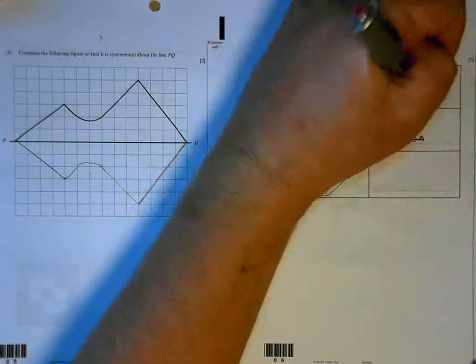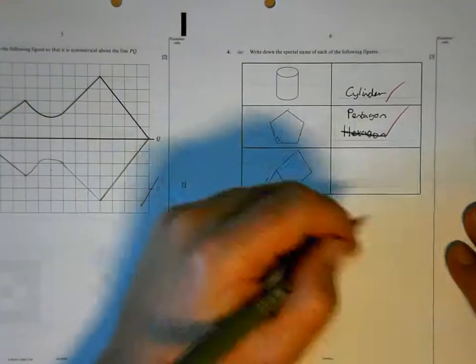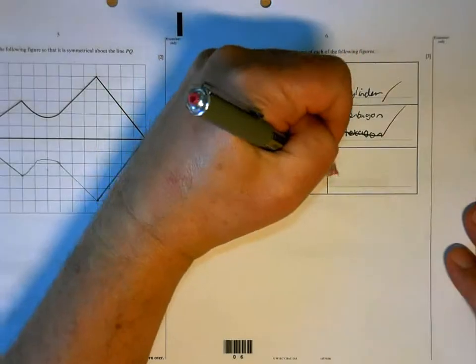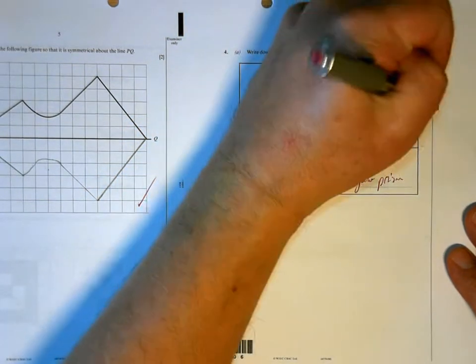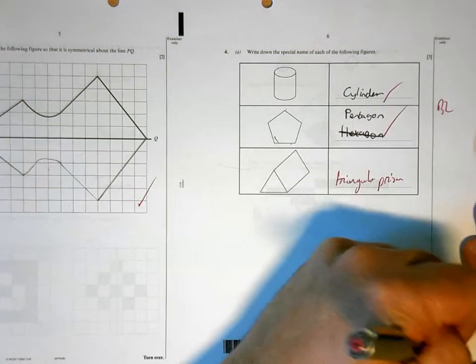The reflection is good. That's a cylinder, that's a pentagon. This is just called a triangular prism. Two there, four for the page.